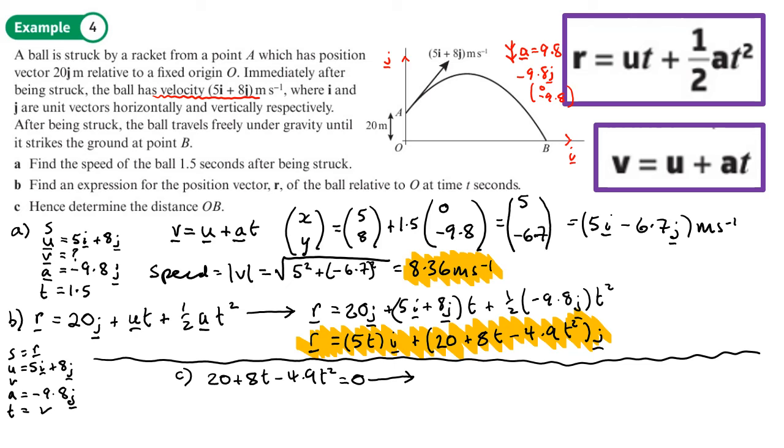That looks like a quadratic, and we can use that to find the time it gets down there, then use the time to work out the distance. Let's write this as 4.9 t squared minus 8t minus 20 equals zero. I'm going to use my calculator to solve that: 4.9, negative 8, negative 20.